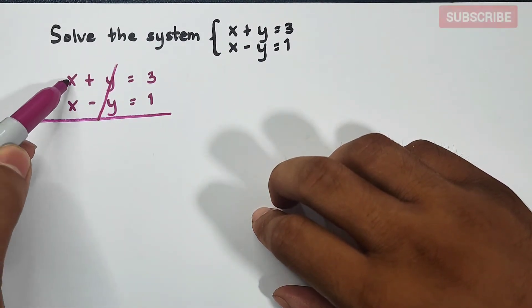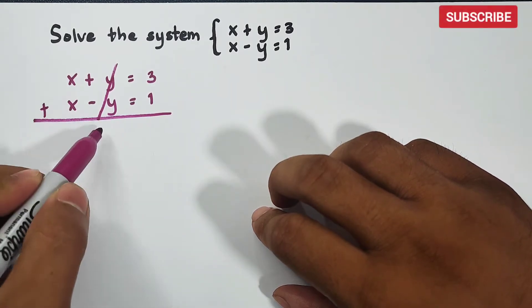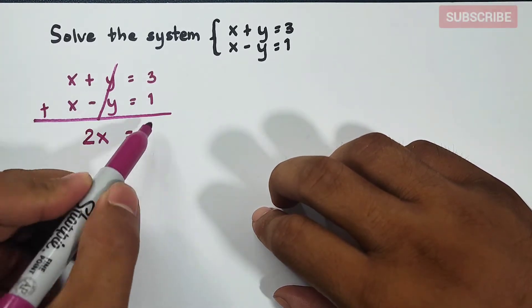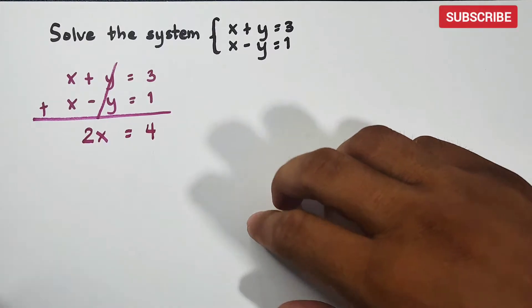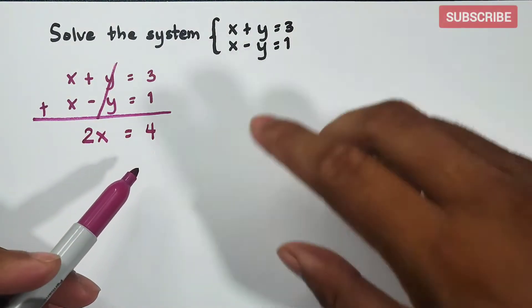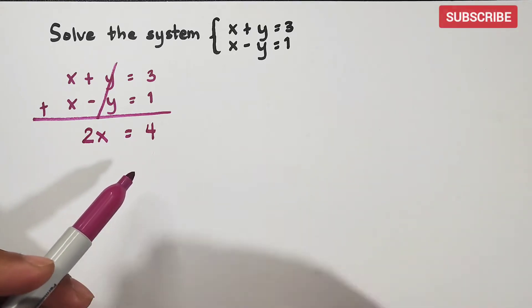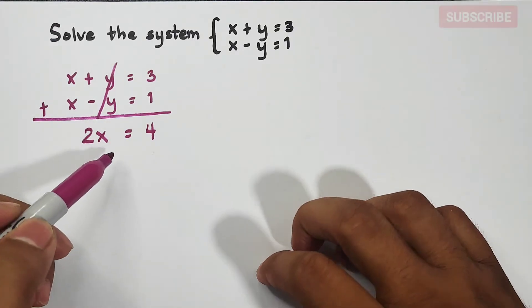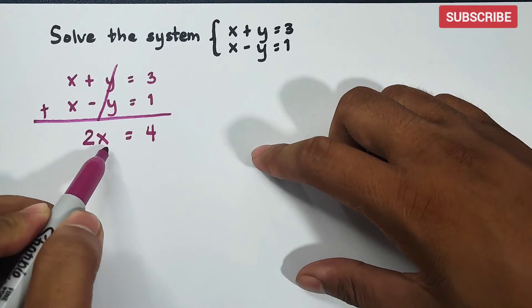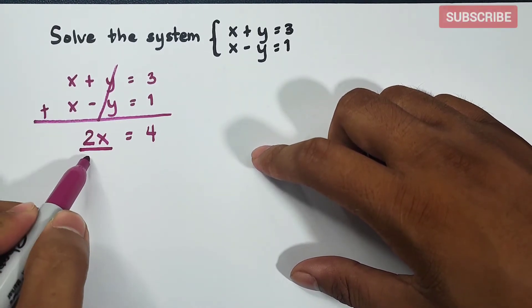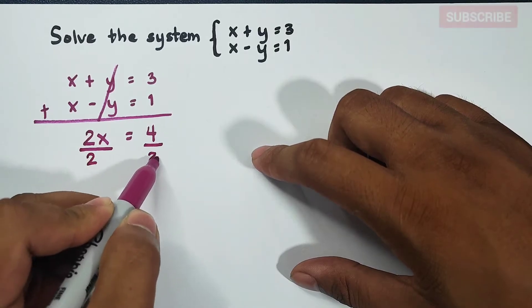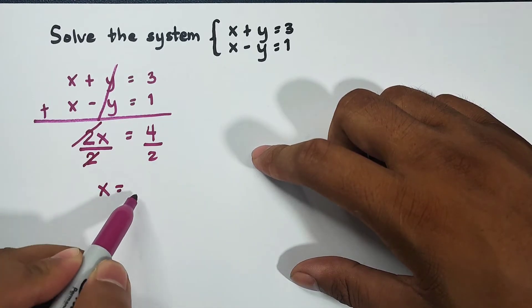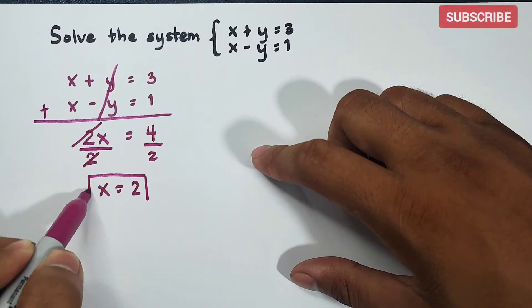What remains is the x variable. x plus x gives 2x, and 3 plus 1 gives 4, so 2x is equal to 4. Originally we had two variables, x and y, but after applying the elimination method, y is gone and we have 2x equals 4. Dividing both sides by 2, we get x is equal to 2.